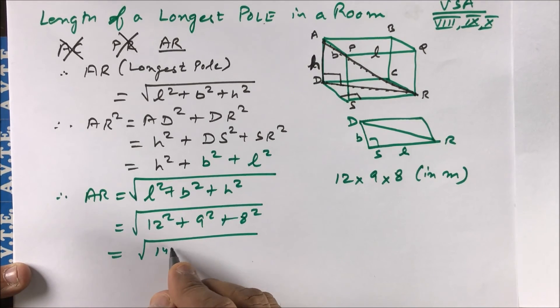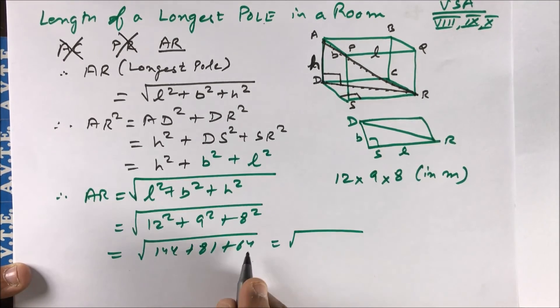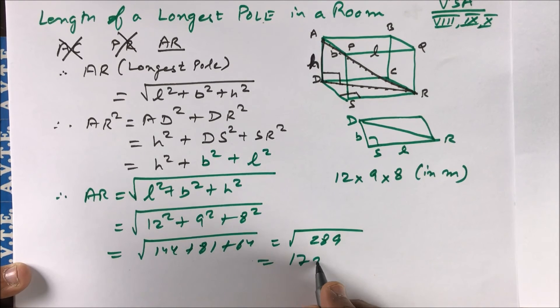That is 144, 81 plus 64. That is 17 meters.